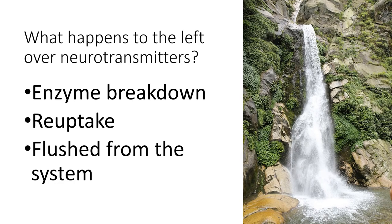So what happens to leftover neurotransmitters? Well, enzymes can break them down. Reuptake can put them back into nerve cells as they're broken down and reused, or they can be flushed from the system. For example, someone who does stimulant drugs — all of the receptor sites for normally occurring noradrenaline or norepinephrine are filled. It can't all be broken back down, and so some of the naturally occurring neurotransmitters get flushed out of the system. They leave the body in the urine, resulting in a shortage of stimulant neurotransmitters in the future and that crashing, tired feeling that people who do stimulants have when they withdraw from the stimulant.